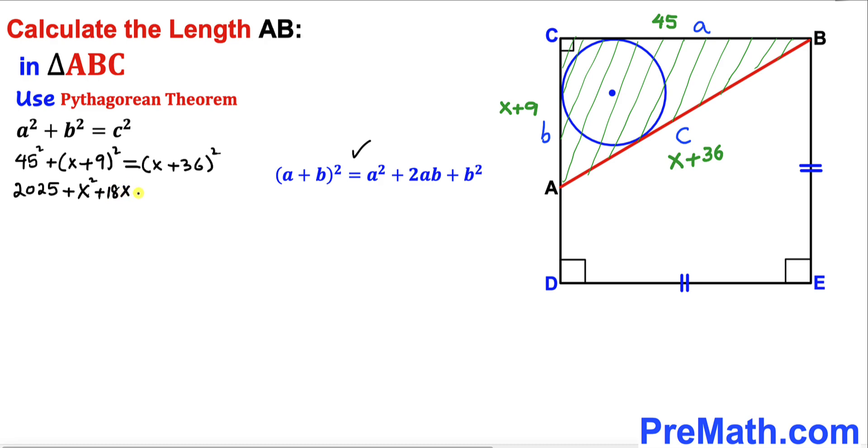We are going to apply the same identity on this binomial as well, so that gives us x² + 72x + 1296.